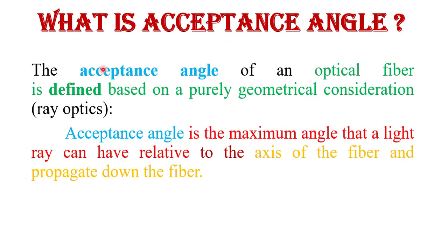The second and most important parameter is acceptance angle. The acceptance angle of an optical fiber is purely based on geometrical consideration. It is defined as the maximum angle that a light ray can have relative to the axis of the fiber and still propagate down the fiber. It is denoted by theta naught or theta maximum.